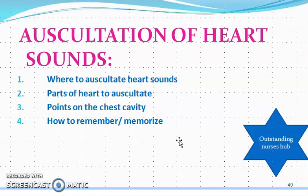It is a very important topic because most of the time we have to auscultate the heart sounds of patients. Sometimes students become confused about which area to auscultate, what points on the chest cavity to consider, and how to memorize them. Today we are discussing heart sounds, the parts of the heart to auscultate, the points on the chest cavity, and I will give you a trick and mnemonic to help you remember and recall the auscultation points.